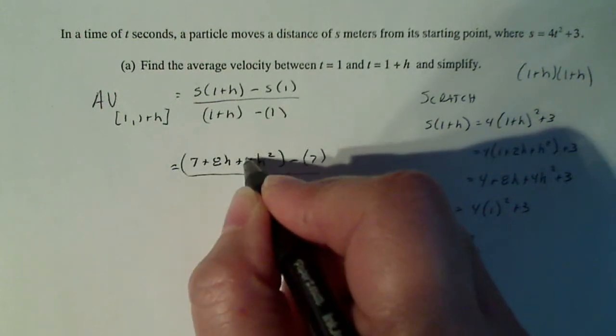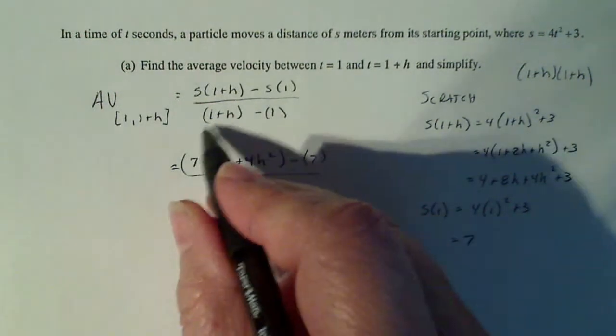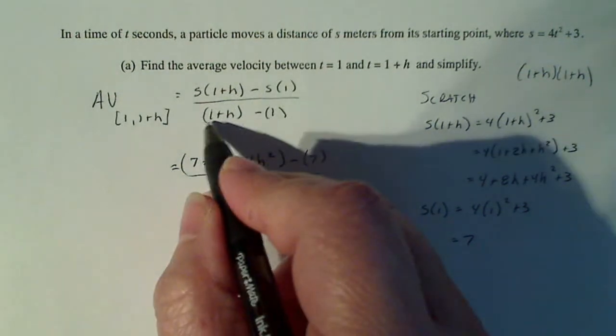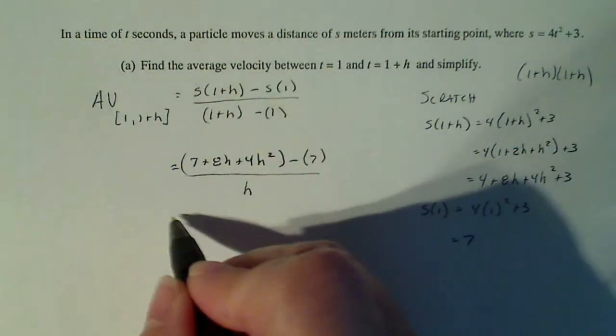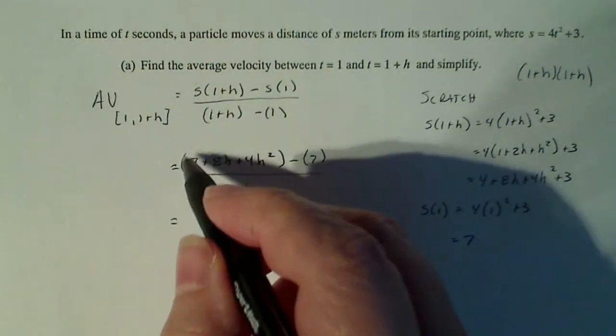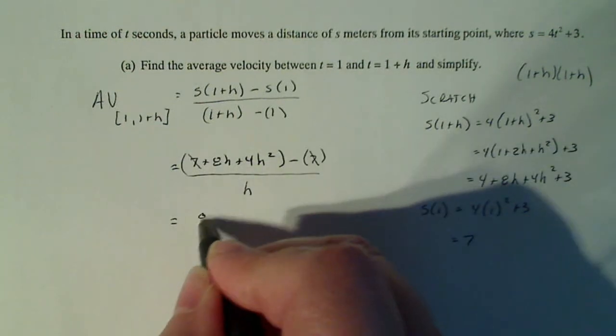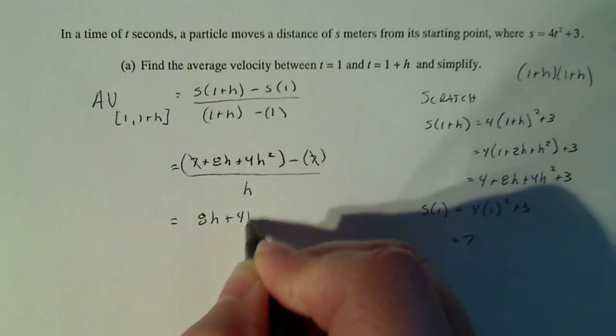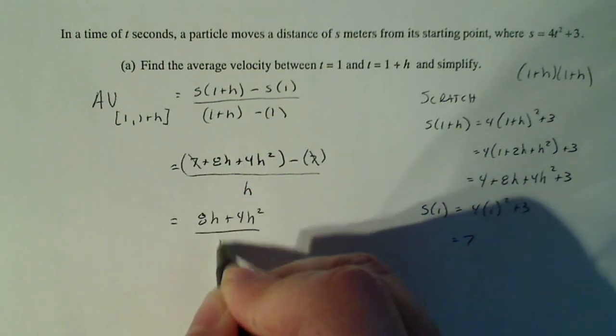all divided by h because the ones here will cancel. So what do I have left here? These 7 cancels with this 7 and I'm left with 8h plus 4h² divided by h.